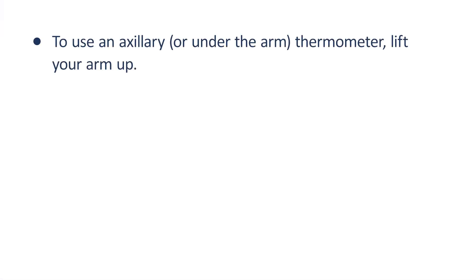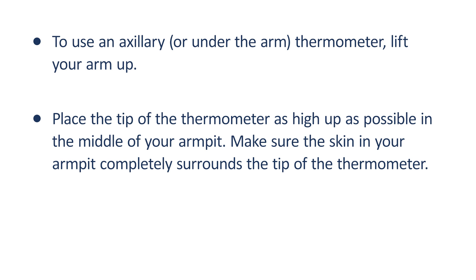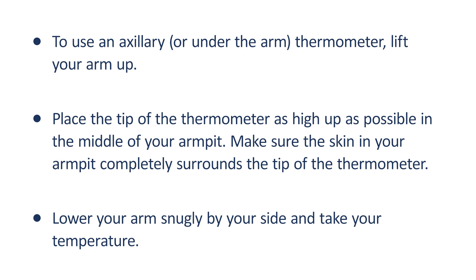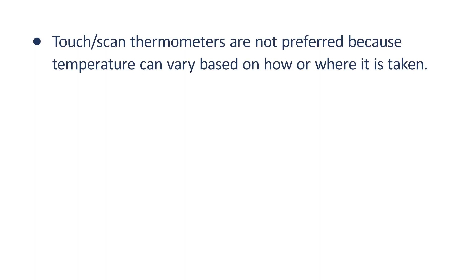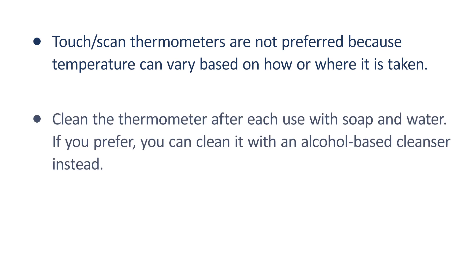To use an axillary or under-the-arm thermometer, lift your arm up. Place the tip of the thermometer as high up as possible in the middle of your armpit. Make sure the skin in your armpit completely surrounds the tip of the thermometer. Lower your arms snugly by your side and take your temperature. Touch scan thermometers are not preferred because temperature can vary based on how or where it is taken.